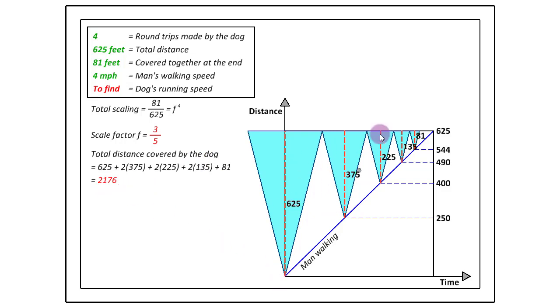But while the dog is doing this shuttling back and forth, the man has also reached this point, which is 544 from their home. So we know the distance covered by the man and we know the distance covered by the dog. So we can find the ratio of their distances covered, which is nothing but the ratio of their speeds as well, because they are taking the same amount of time. And that turns out to be 4. So we know that the dog is running 4 times faster than the man is walking. So we can figure out the speed of the dog to be 4 into 4 is equal to 16 miles per hour.